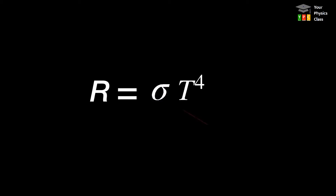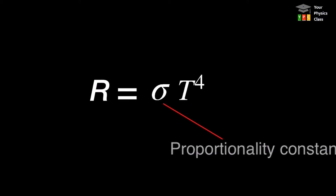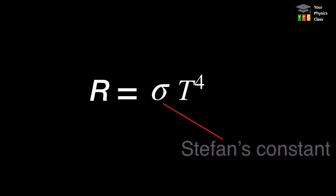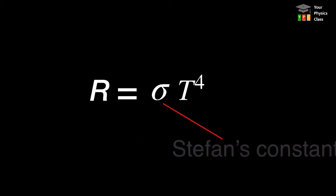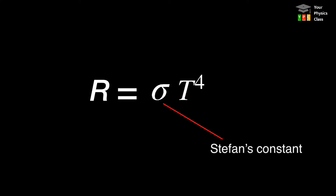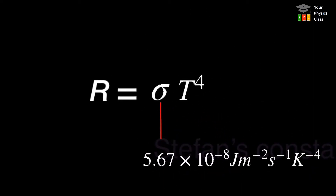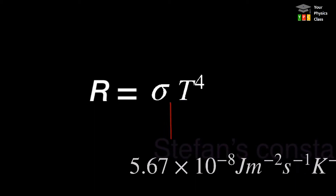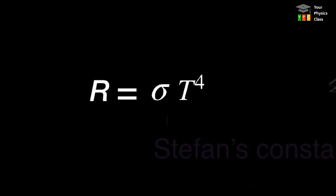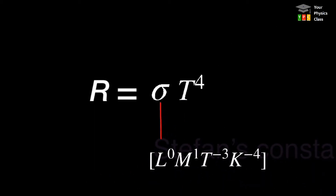Mathematically, sigma is a proportionality constant, but here it has special significance. It is known as Stefan's constant and equals 5.67 times 10 raised to minus 8 in SI units, with dimensions equal to M¹ T⁻³ K⁻⁴.